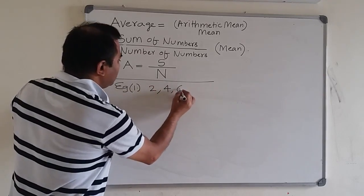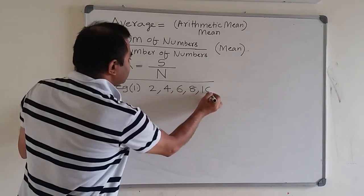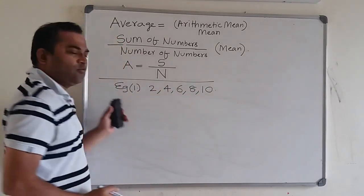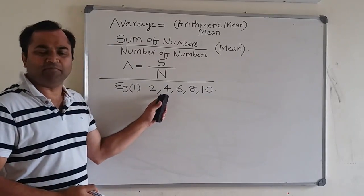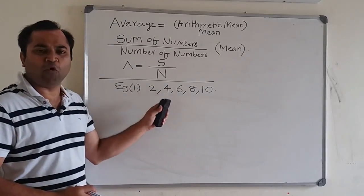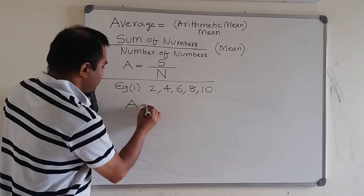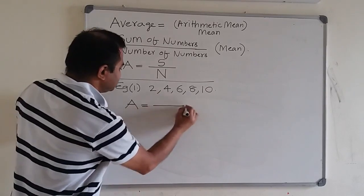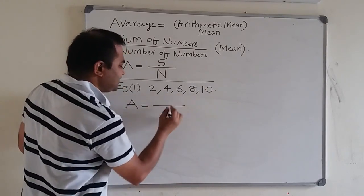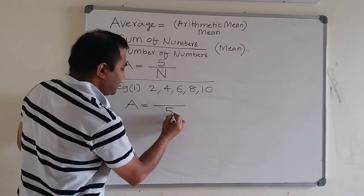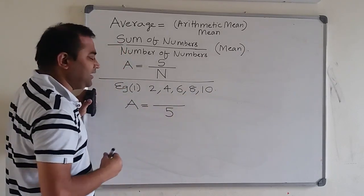Let's do an example. Suppose we have these numbers whose average must be found. What is the average of 2, 4, 6, 8, 10?